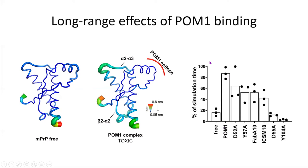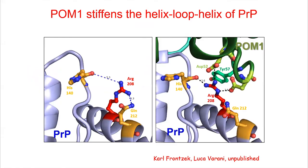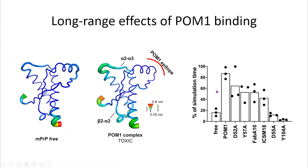The idea was that if the hydrogen latch really creates the toxicity, maybe we could mutagenize the antibody so it still binds but no longer forms the H-latch. There is a whole network of interactions between the residues of the antibody and the prion protein, so we performed an alanine scan to mutagenize all residues until we found something that could no longer create the H-latch. These were the results from molecular dynamics simulations — purely theoretical computing work.